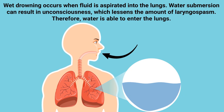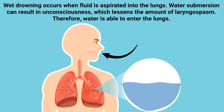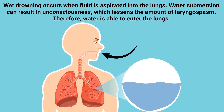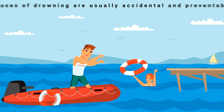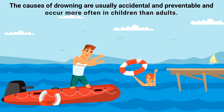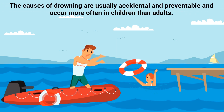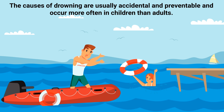Wet drowning occurs when fluid is aspirated into the lungs and is the most common type of drowning. Water submersion can result in unconsciousness, which lessens the amount of laryngeal spasm, therefore water is able to enter the lungs — thus the name wet drowning.